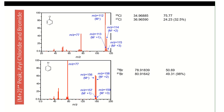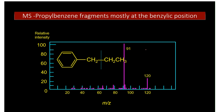For halides, we see M+2 peaks. For chlorine, there's a 3:1 ratio because ³⁵Cl to ³⁷Cl abundance is approximately 3:1. For bromine, you see a 1:1 peak for ⁷⁹Br to ⁸¹Br, since those are approximately 50:50. Loss of the halide gives the remaining fragment — for example, loss of ³⁵Cl or ³⁷Cl gives a peak at m/z = 67.